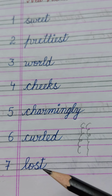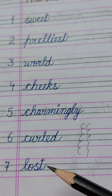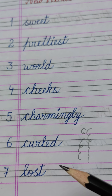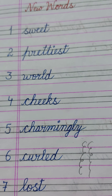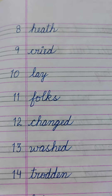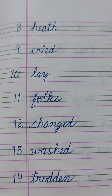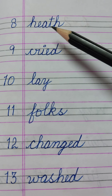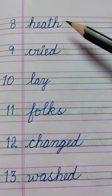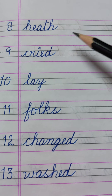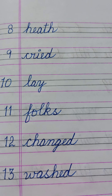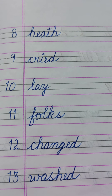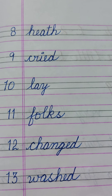The seventh word is 'lost'. L-O-S-T, lost. Lost means खो जाना किसी का. The eighth word is 'heath'. H-E-A-T-H, heath. Heath means ऐसी जमीन या ऐसा एरिया जहां पर ढेर सारी जाड़ियां या घास-पूस उगी हो.